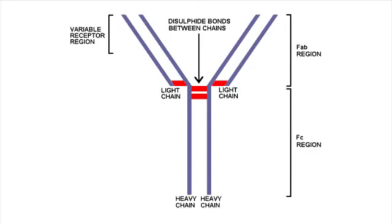Generally, the structure of the antibody is Y-shaped, consisting of two light and two heavy chains. Light chains are attached to the heavy chains by one disulfide linkage. Two heavy chains are connected by two disulfide linkages. The upper arms of the structure are called the FAB region, which is specific for the interaction with antigens. The lower end region is called the FC region, which interacts with receptors on the membrane surface of immune system cells.